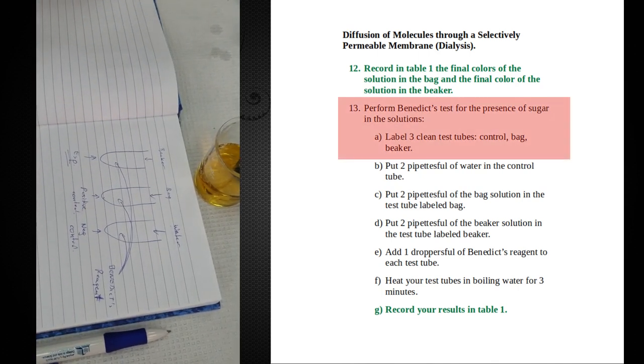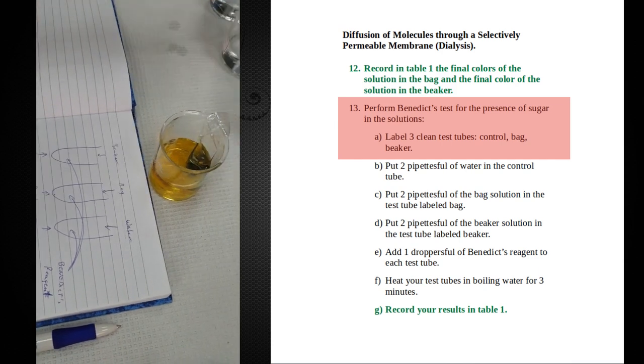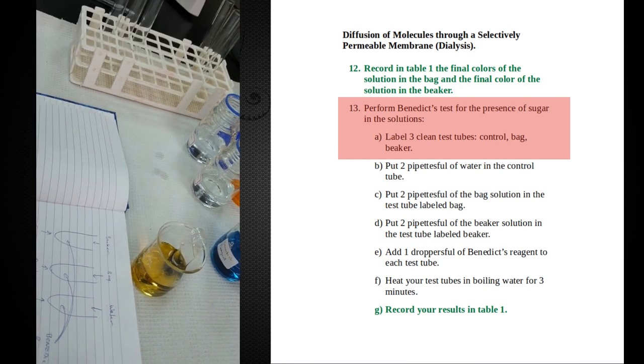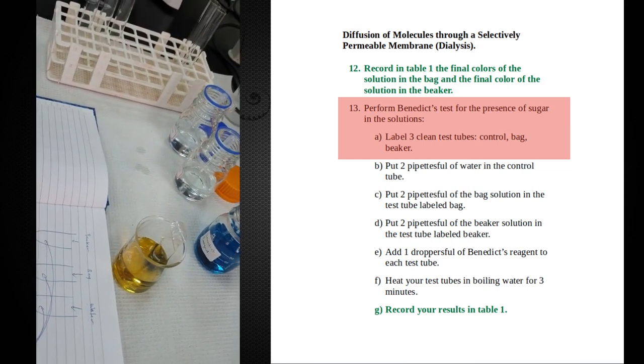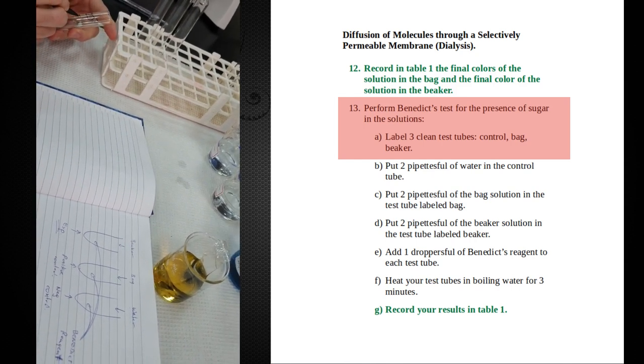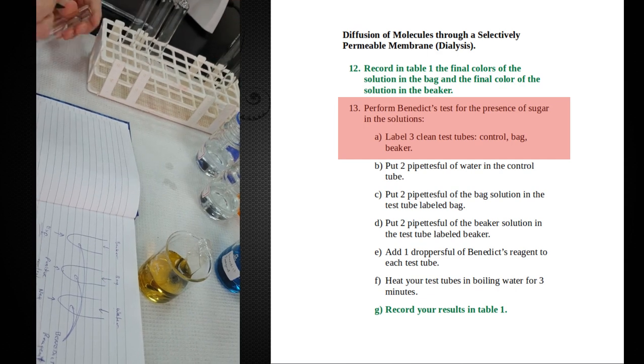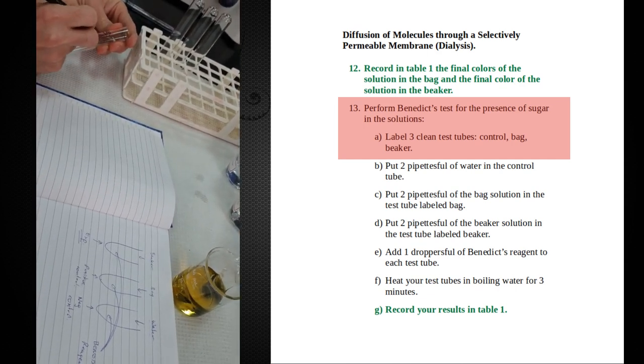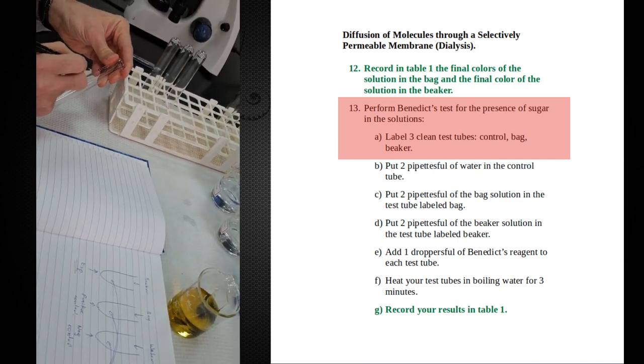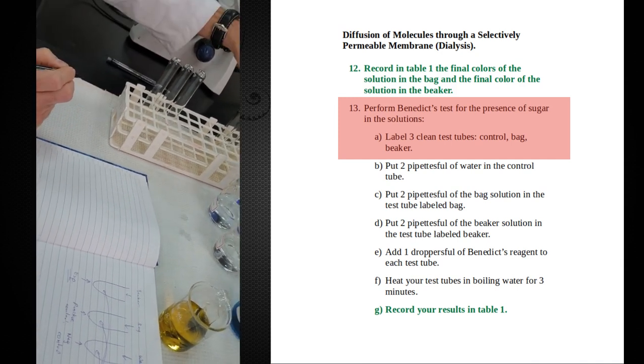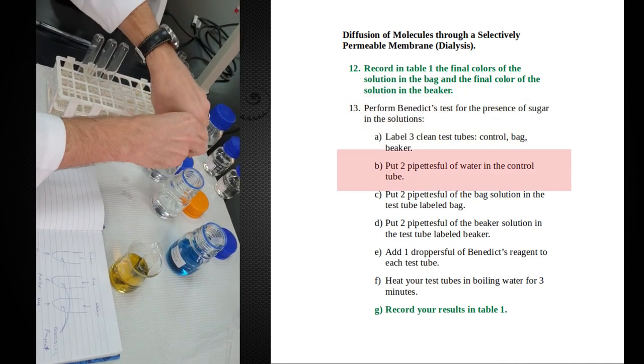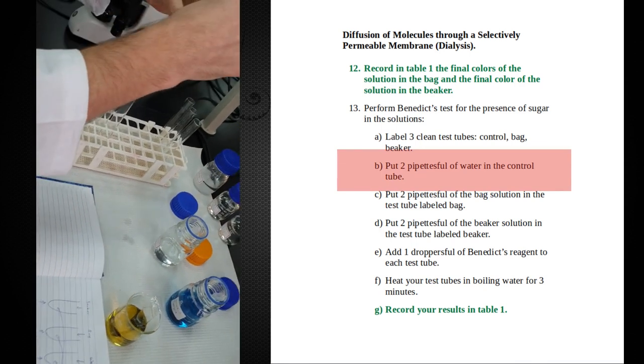So let's set this up. We need three test tubes. Tube one will be our experimental. Two will be my positive control. And three will be my negative control. So my negative control.